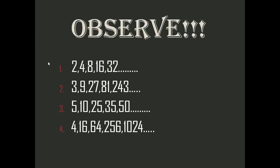Let us observe the four series of numbers on the screen. The first series is 2, 4, 8, 16, and 32, and so on. The second series is 3, 9, 27, 81, 243, and so on. The third one is 5, 10, 25, 35, 50, and so on. The fourth one is 4, 16, 64, 256, and 1024, and so on.